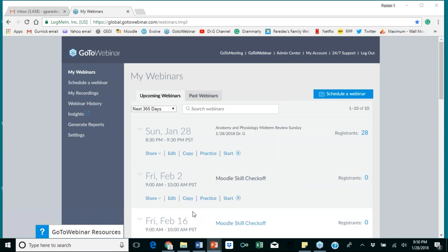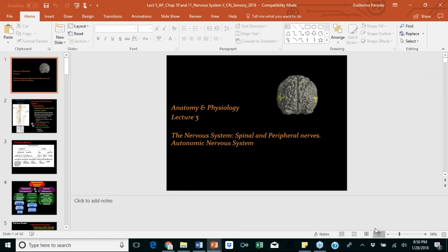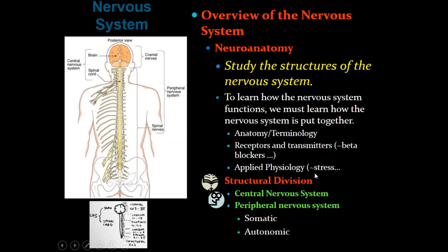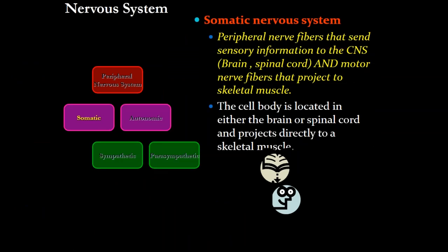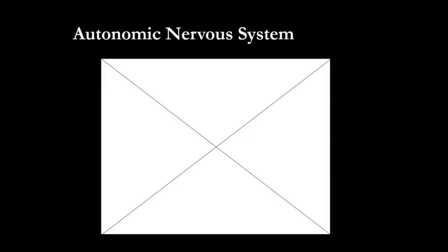Lecture five continues the nervous system. The central nervous system is divided into brain and spinal cord. The brain is divided into the cerebrum, cerebellum, and brain stem. The brain stem is divided into midbrain, pons, and medulla oblongata. In the medulla oblongata we have the crossover of the nerves, the respiratory center, the cardiovascular center, et cetera.